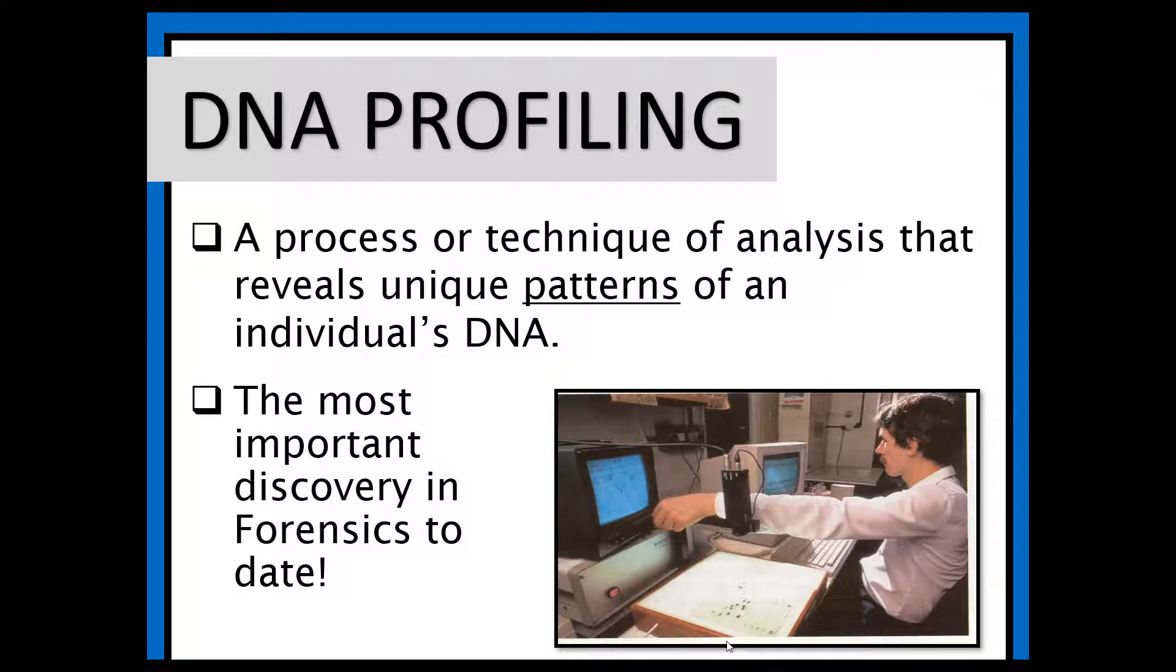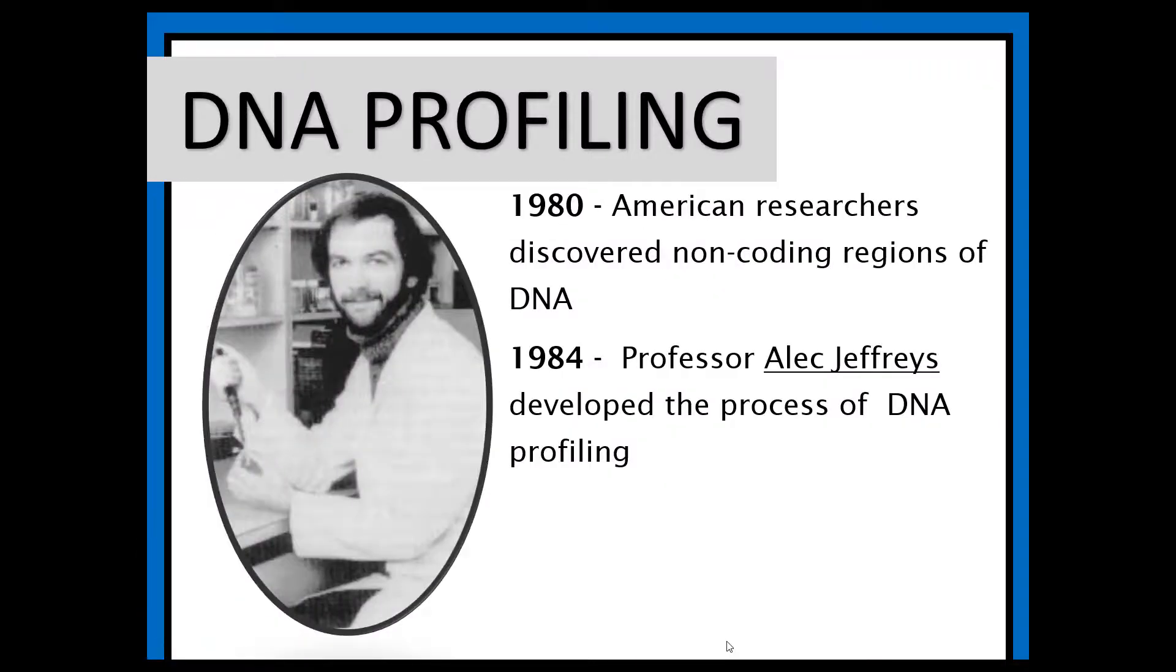DNA profiling is the most important discovery in forensics to date. DNA profiling is the actual process of determining an individual's characteristics. And we know that DNA, except for identical twins, is unique to each person. It all started with Alec Jeffries back in 1984, and he was in his lab working on x-ray and DNA. What he found was that he could tell a lot about a person just by looking at their genetic profile or their DNA fingerprint. 1984 is when Alec Jeffries developed the process of DNA fingerprinting or DNA profiling.